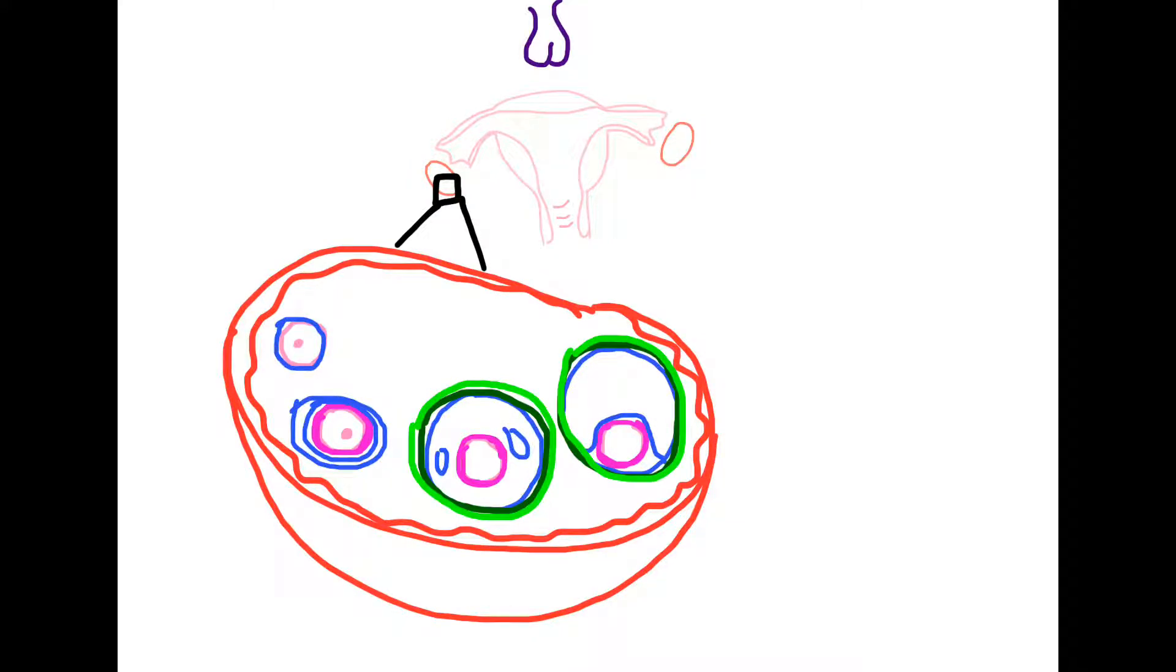Hello, today we will be discussing ovulation and here we have our primordial follicle. Now the primordial follicle is made up of an ova, one egg, surrounded by a single layer of follicular cells.